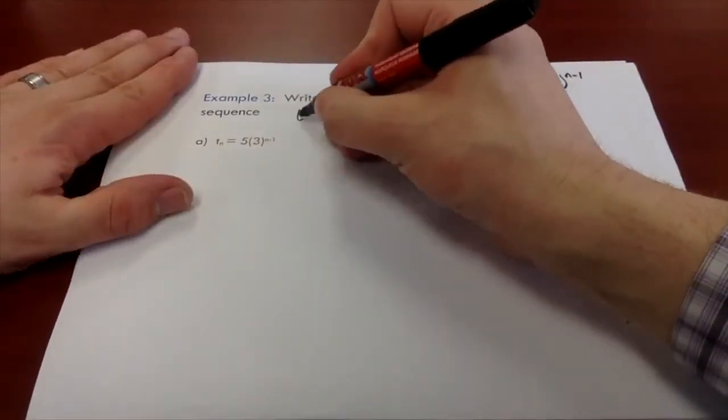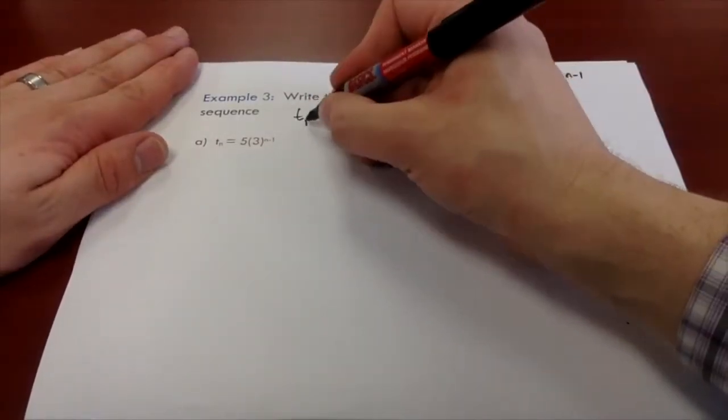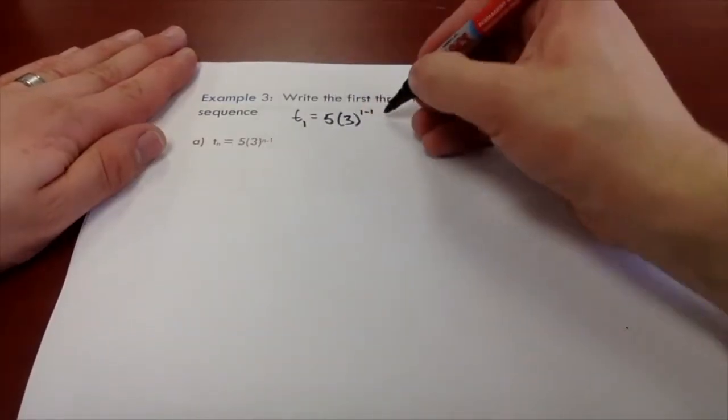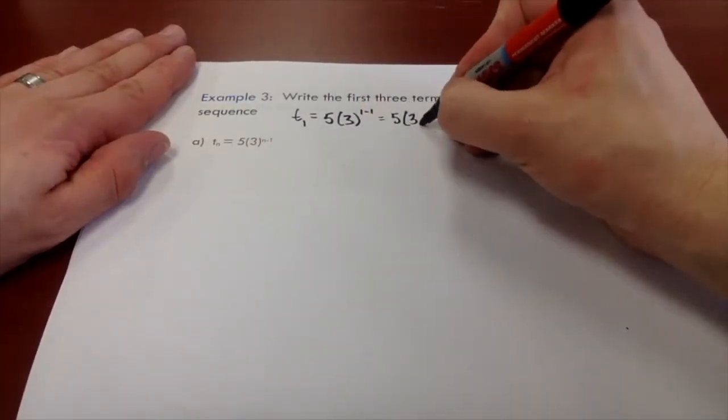But let me show you how you'd arrive at that by completing a calculation. Remember we want to look at t1, our first term. So we're going to sub one in for n. Well, this is just five times three to the power of zero.